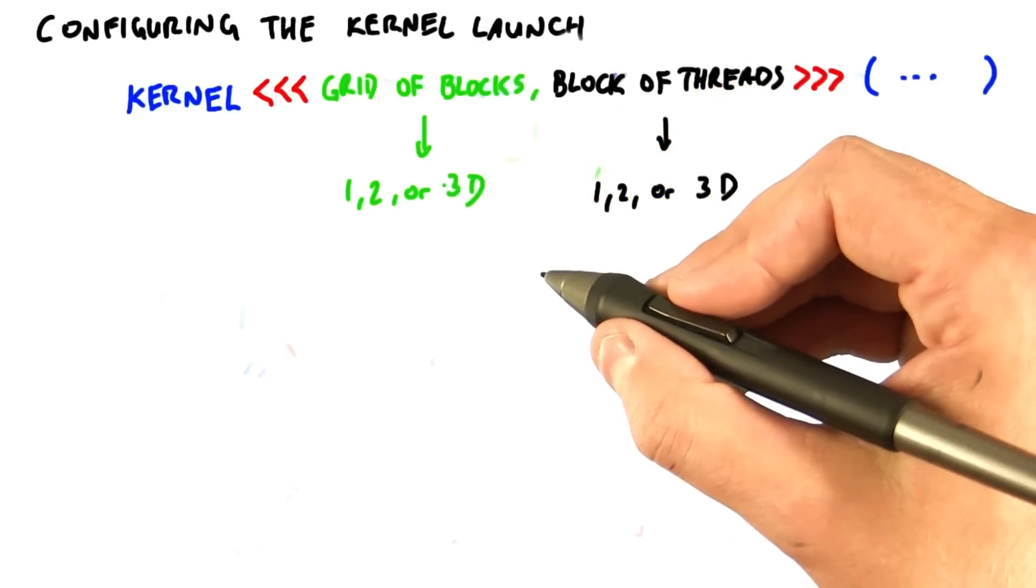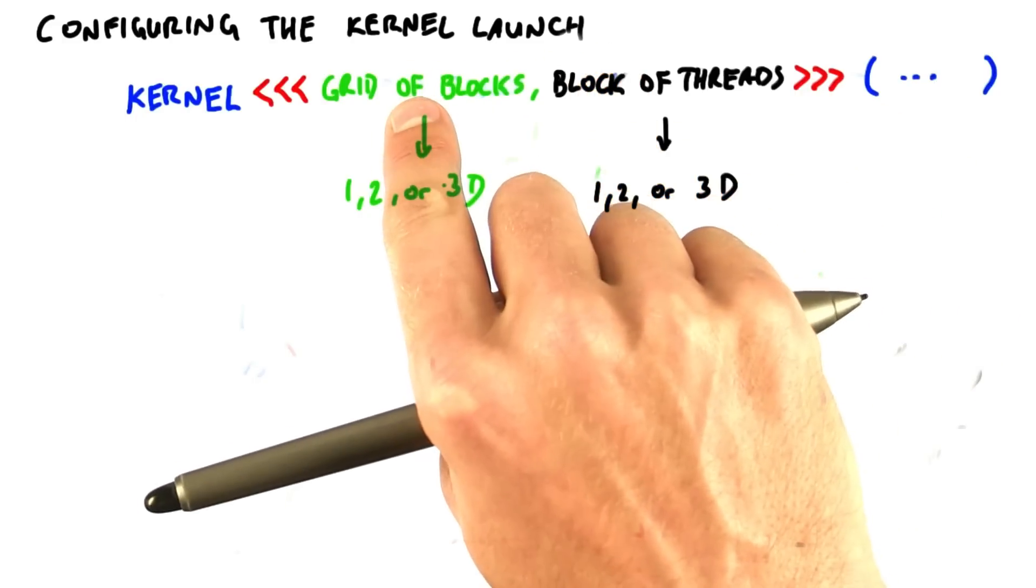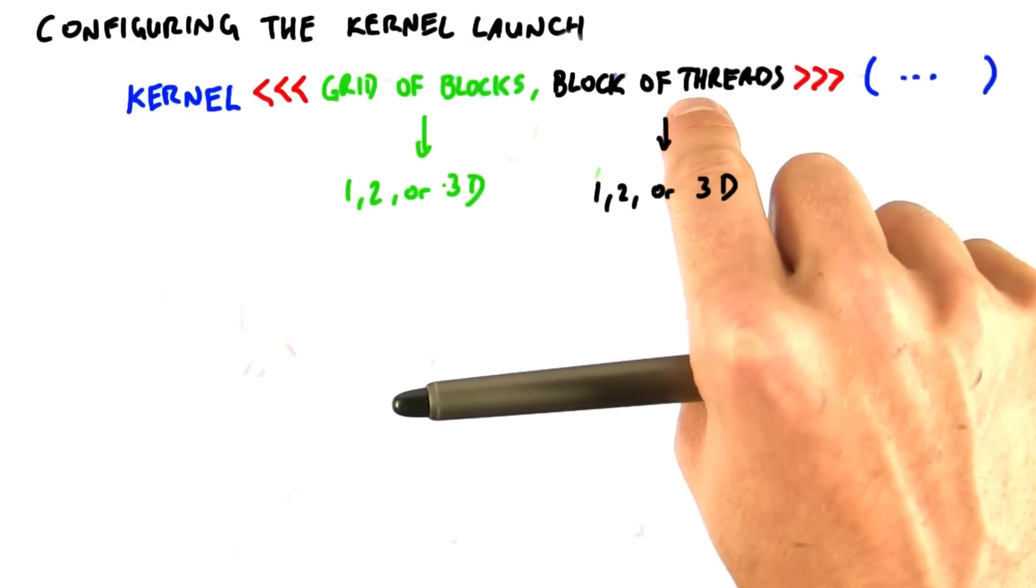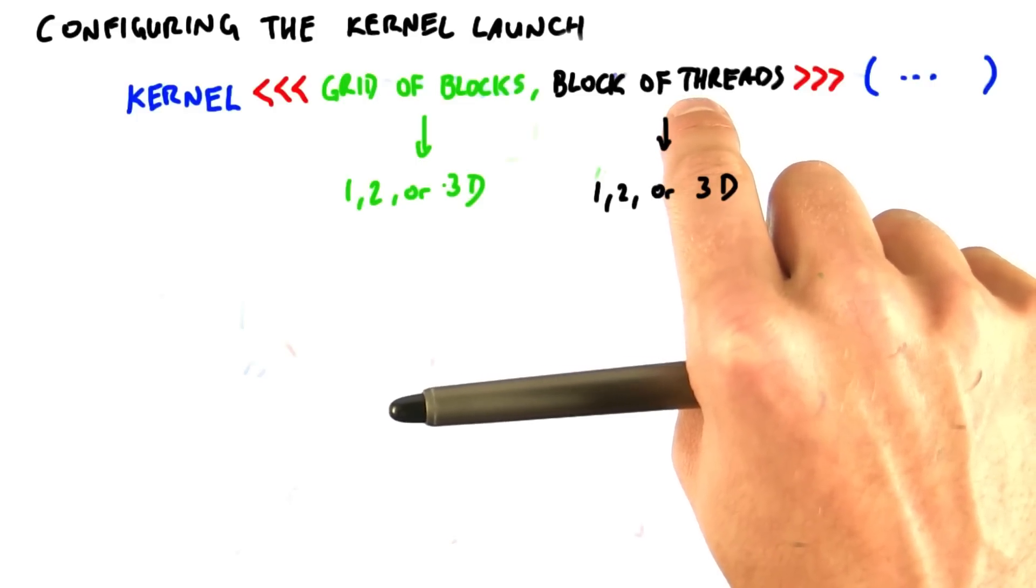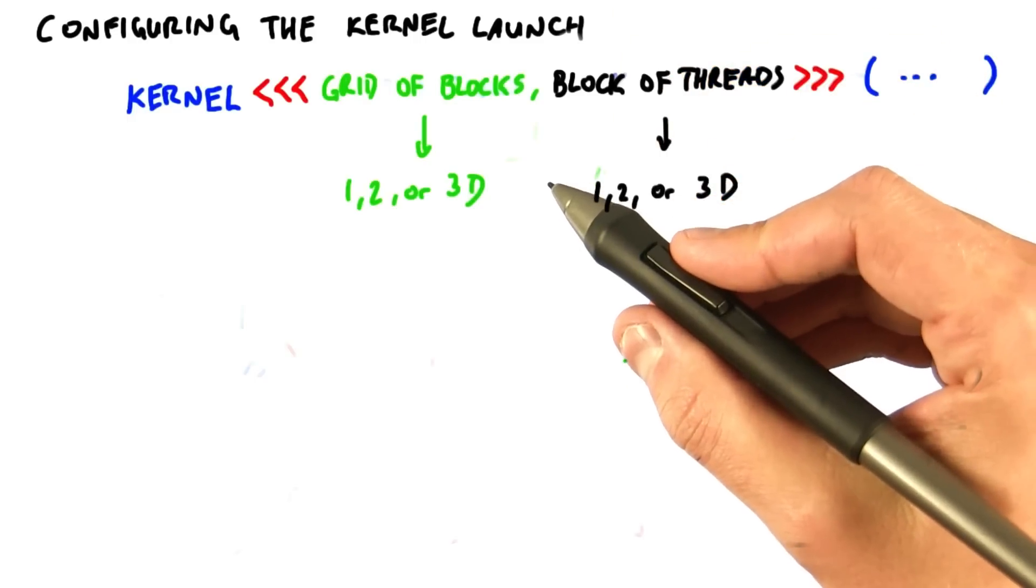So now let's return to how we launch kernels. We put two parameters in the triple chevrons. The first is the dimensionality of the grid of blocks, and the second is the dimensionality of the threads within a block. We can specify up to three dimensions for each, but if we don't specify a dimension, it defaults to one.